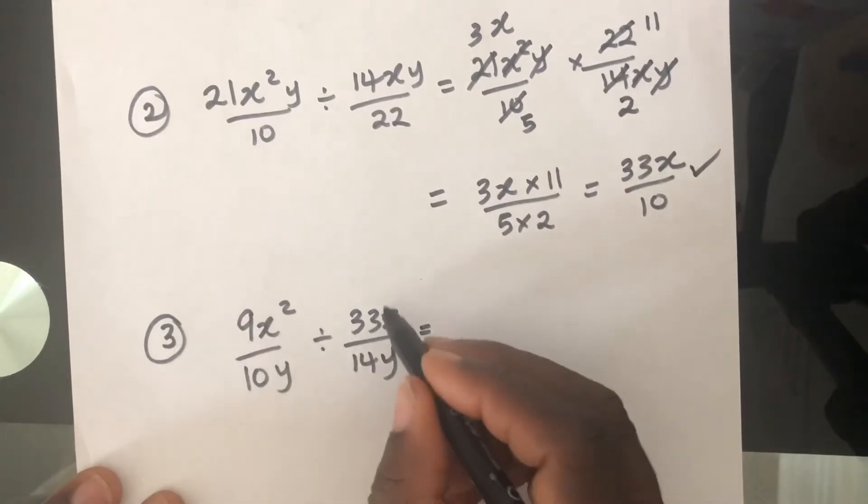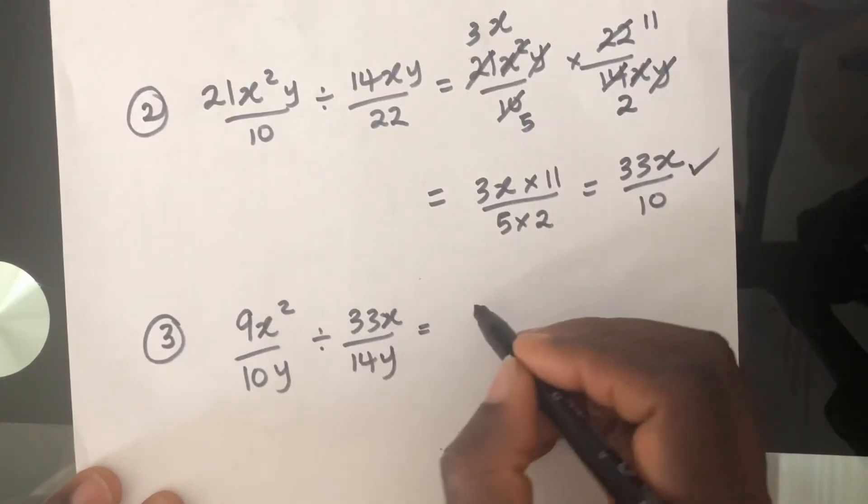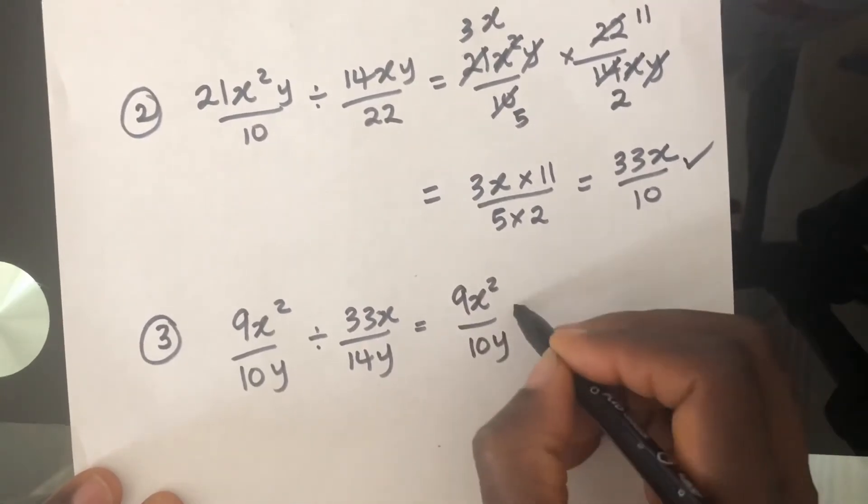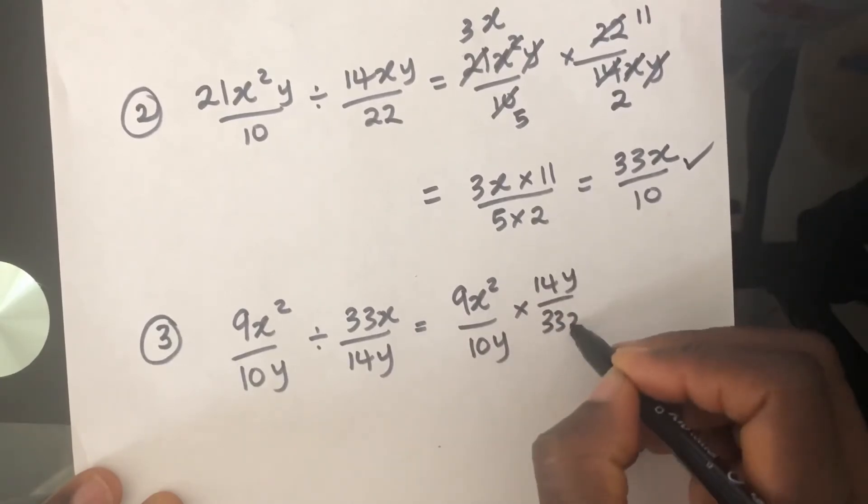then we can leave this fraction as it is and take the reciprocal of the other fraction and use the multiplication sign. Multiply it by the reciprocal of the second fraction times 14Y over 33X.